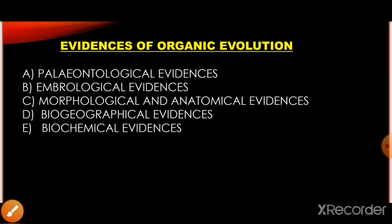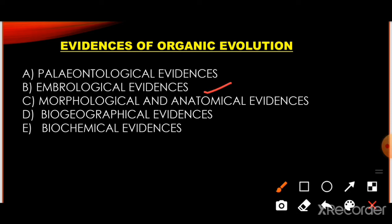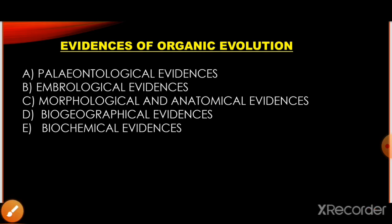We have a lot of evidence that supports organic evolution. First, we have paleontological evidence. Then we have embryological evidence. Then morphological and anatomical evidence. Then biogeographical and biochemical evidence. In today's lecture, we will cover the first two evidences in detail: paleontological evidences and embryological evidences.